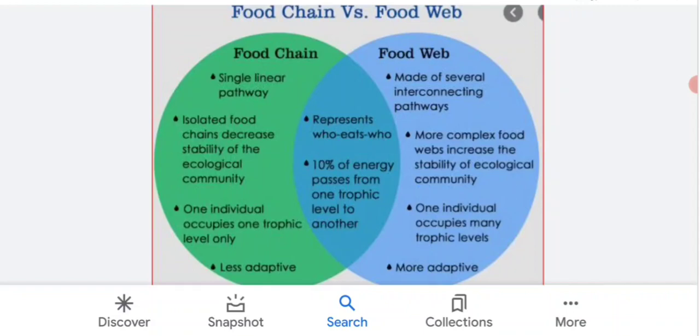Now the differences: food chain is a single linear pathway, unidirectional, but the food web is interconnected. When food chains are interconnected, it is networked. Isolated food chain has decreased stability, but the food web is more complex.